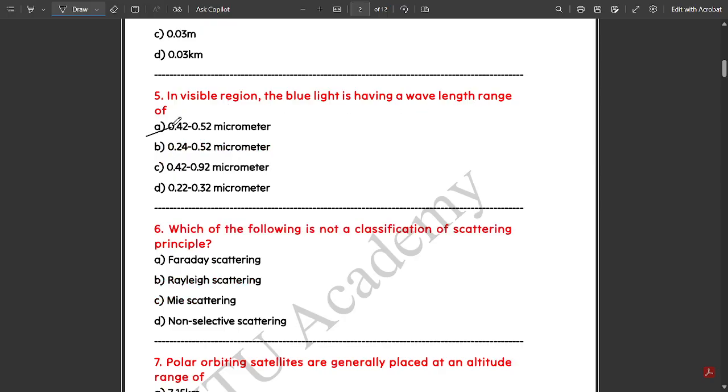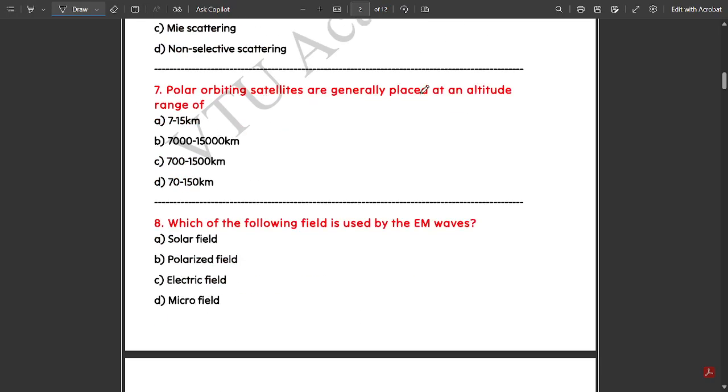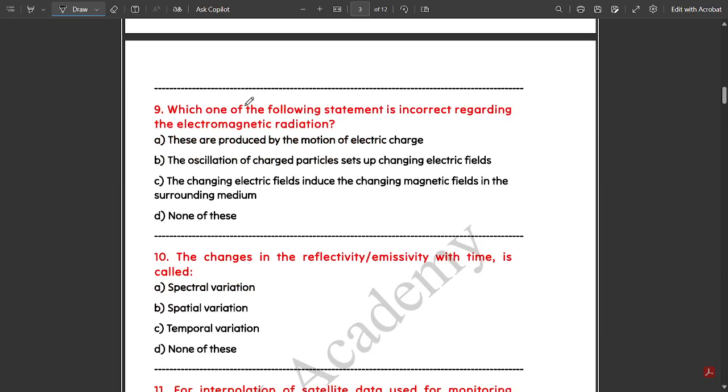Which of the following is not a classification of scattering principle? Faraday scattering is not a classification of the scattering principle. Polar orbiting satellites are generally placed at an altitude range of 700 to 1500 kilometers. Which field is used by electromagnetic waves? Electric field.